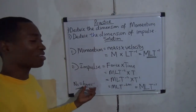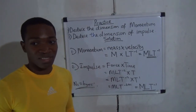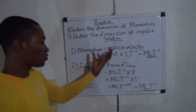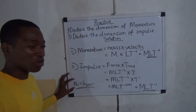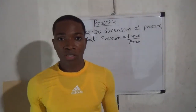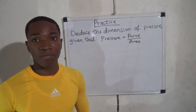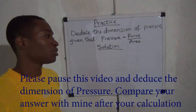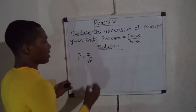That's another importance of dimensional analysis — it tells you which physical quantities have the same SI unit. From this we conclude that impulse and momentum have the same SI unit. This is the last question you have to practice: deduce the dimension of pressure, given that pressure equals force divided by area. Solve this and derive the dimension of pressure using the formula given.